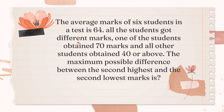All the students got different marks — no student has the same marks. One of the students obtained 70 marks. Other children obtained 40 or above, meaning the minimum marks any child has is 40 and others have more than 40. What you are supposed to answer is the maximum possible difference between the second highest and the second lowest marks.